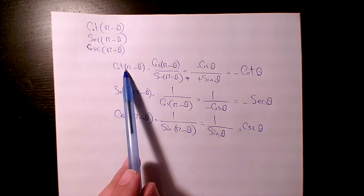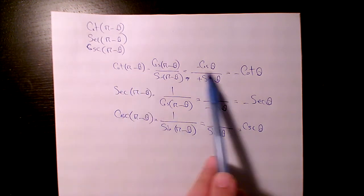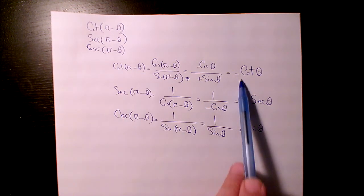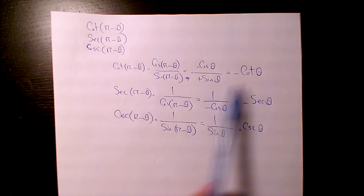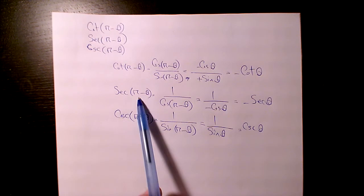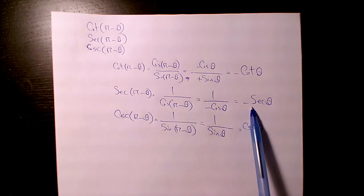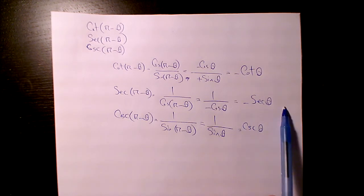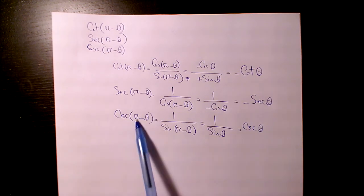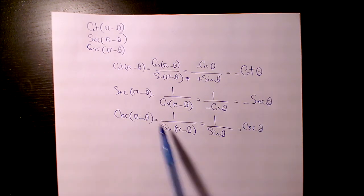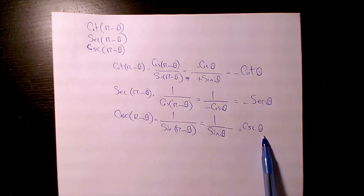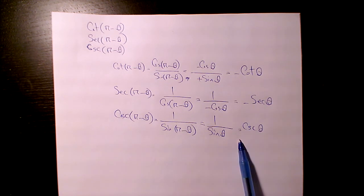So to summarize: cot(π - θ) is equal to negative cot θ, sec(π - θ) is equal to negative sec θ, and csc(π - θ) is equal to csc θ. So these two are negative and this one is positive.